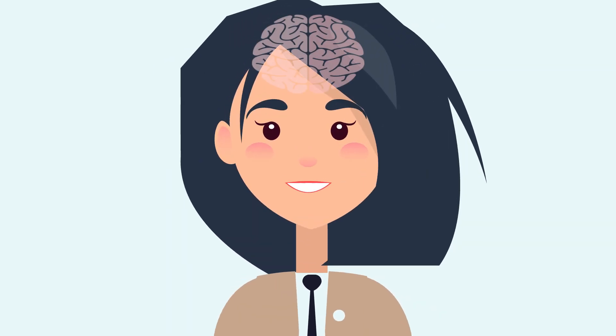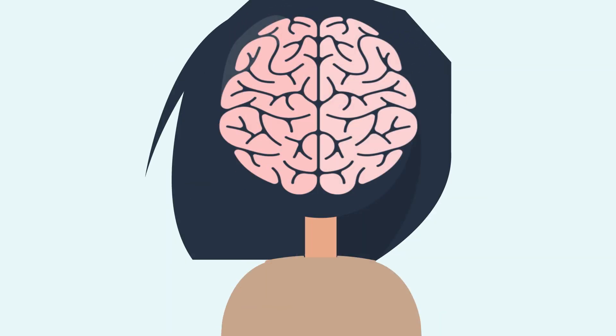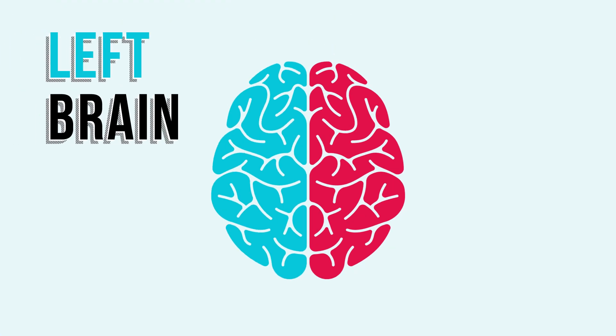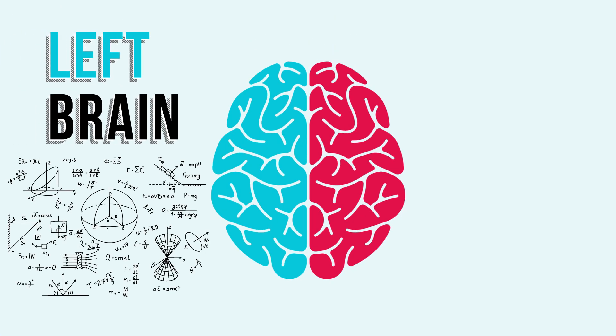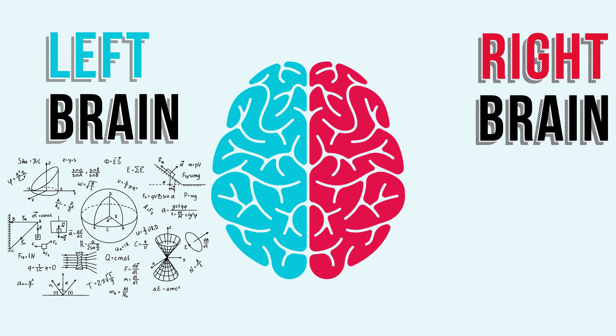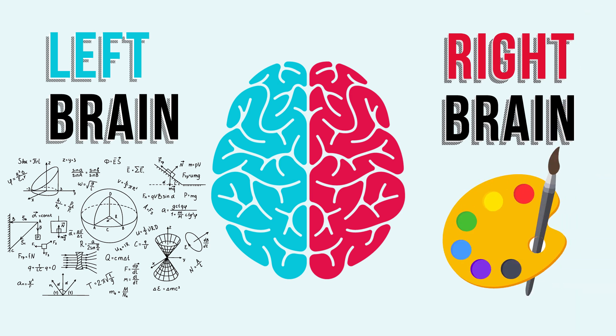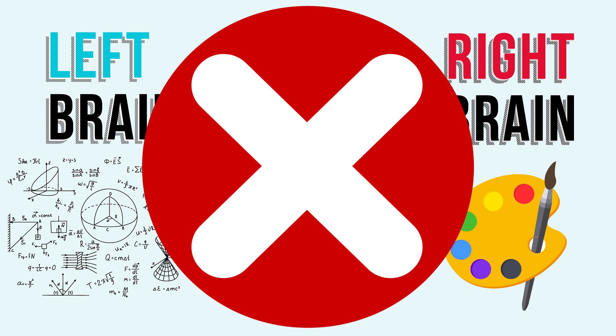There's a common myth that people's personalities are tied to a dominant side of their brain. Left-brained people are supposedly more analytical and mathematical, while right-brained people are said to be more creative and artistic. But the truth is there's no such thing as being a left-brained or right-brained person.